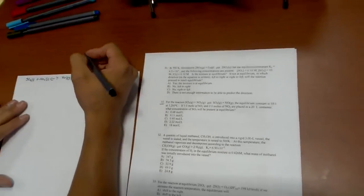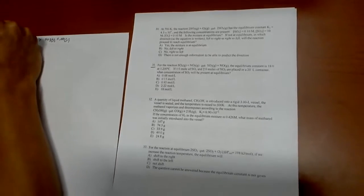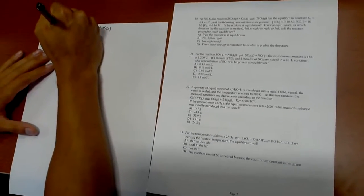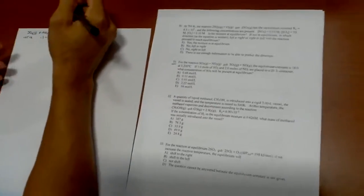Now that we have that, if we wrote down the change at equilibrium these would all look like 0.05 minus x, this one would look like 0.1 minus x. Keep in mind these are the moles.